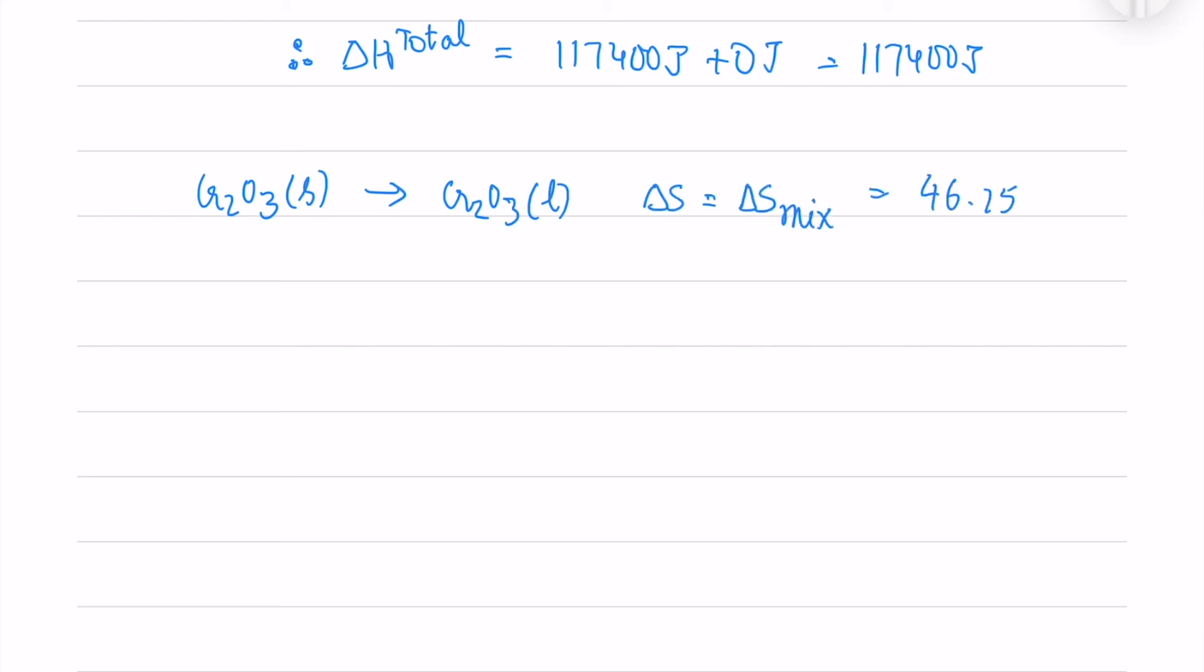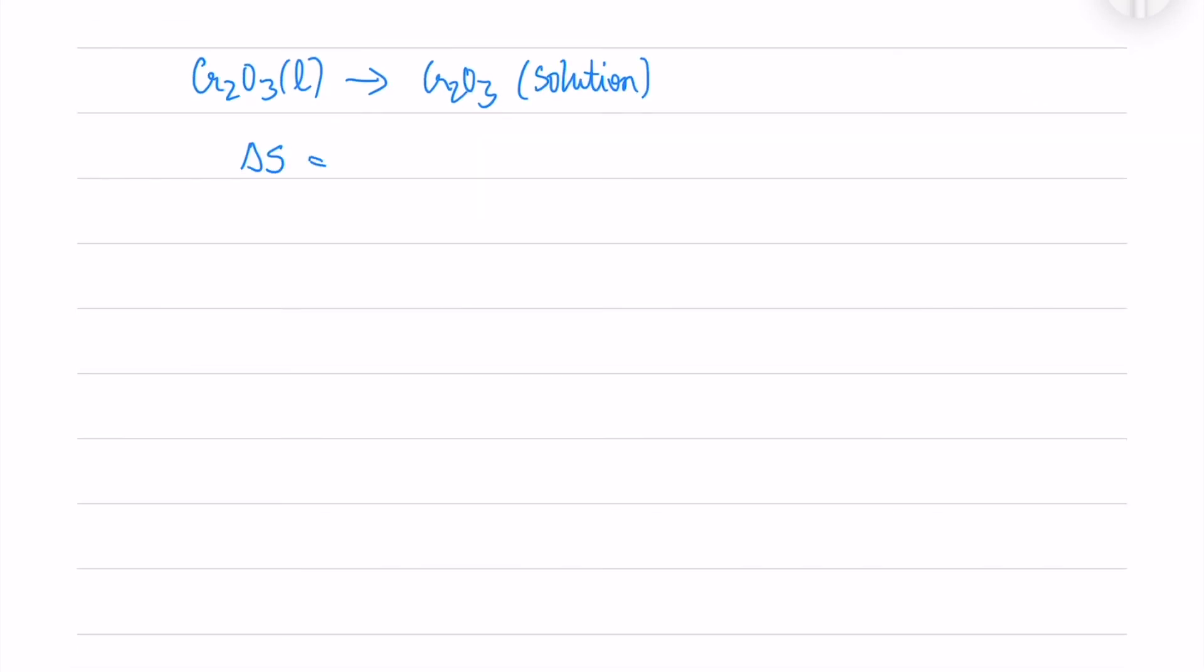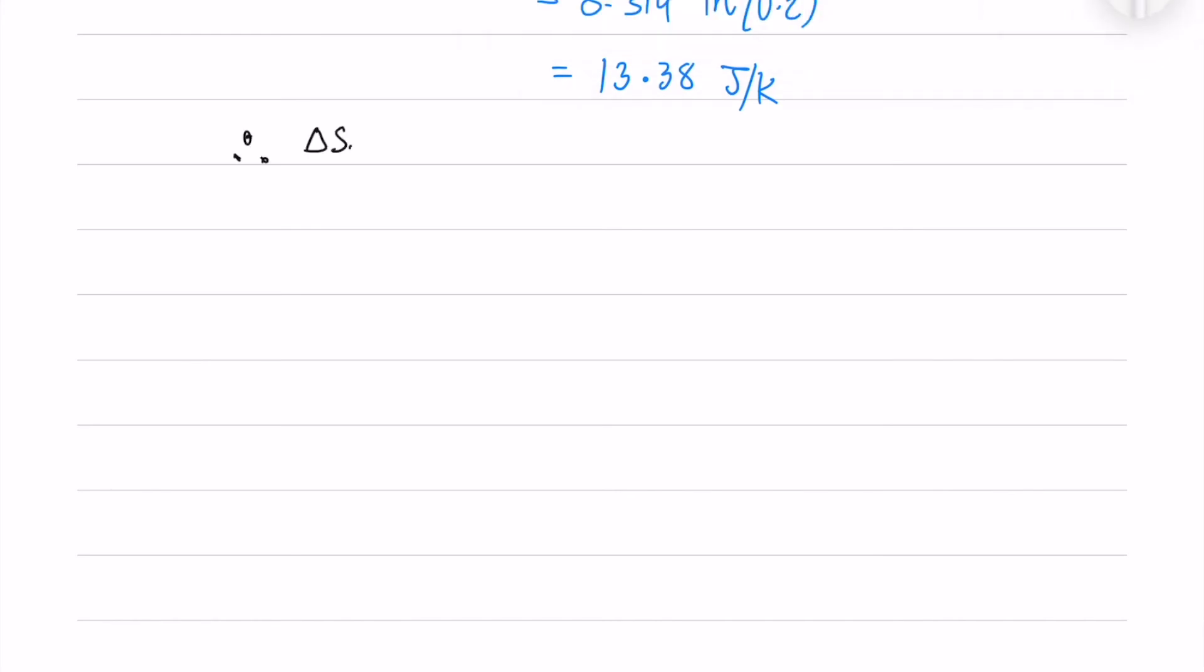Again, we consider the ΔS of mixing. We already got the ΔS of melting for solid to liquid as 46 J/K. Now, from liquid to solution, mixing is minus R ln(X_Cr₂O₃). We know the mole fraction of Cr₂O₃ as 0.2, so that gives 13.38 Joules per Kelvin. The total entropy equals 59.68 Joules per Kelvin.